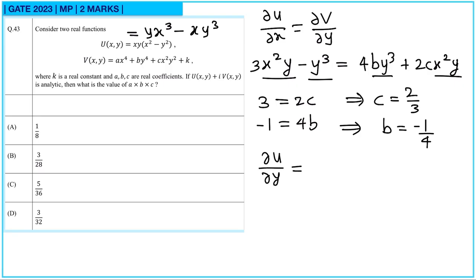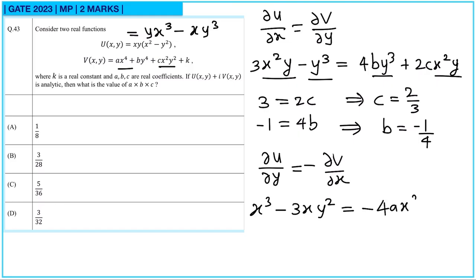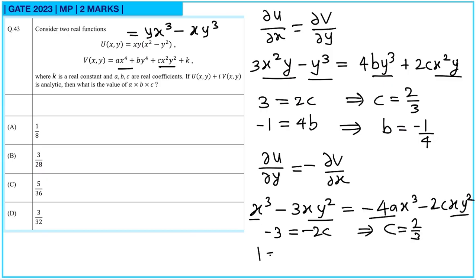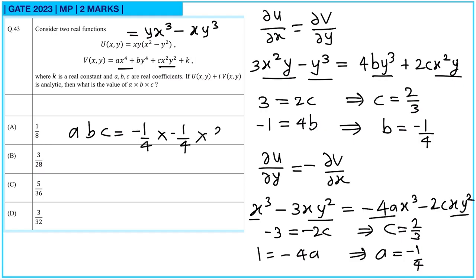Using the second Cauchy-Riemann equation ∂u/∂y = −∂v/∂x: ∂u/∂y = x³ − 3xy². From −∂v/∂x we get −4ax³ + 2cxy². Matching coefficients: −3 = −2c confirms c = 3/2, and 1 = −4a, so a = −1/4. Therefore a·b·c = (−1/4)·(−1/4)·(3/2).